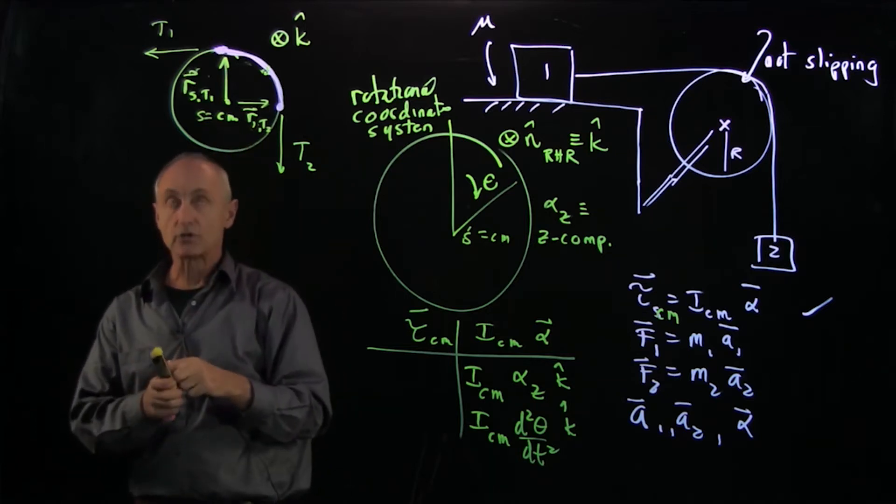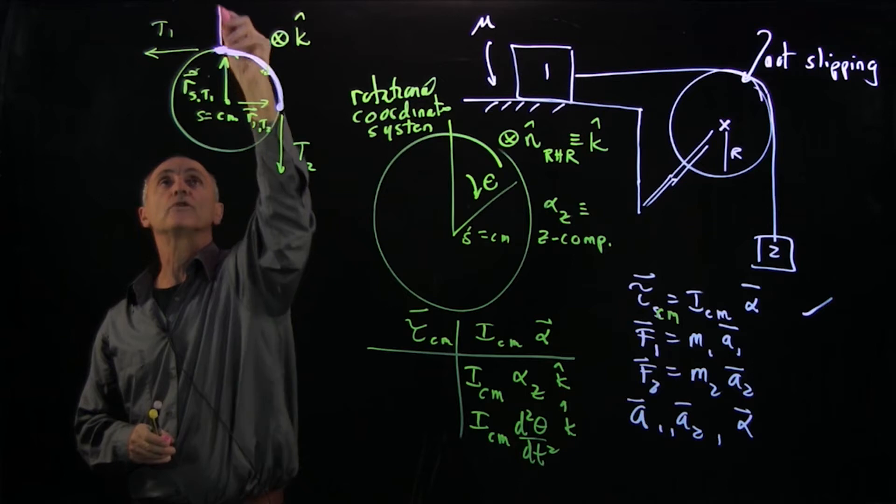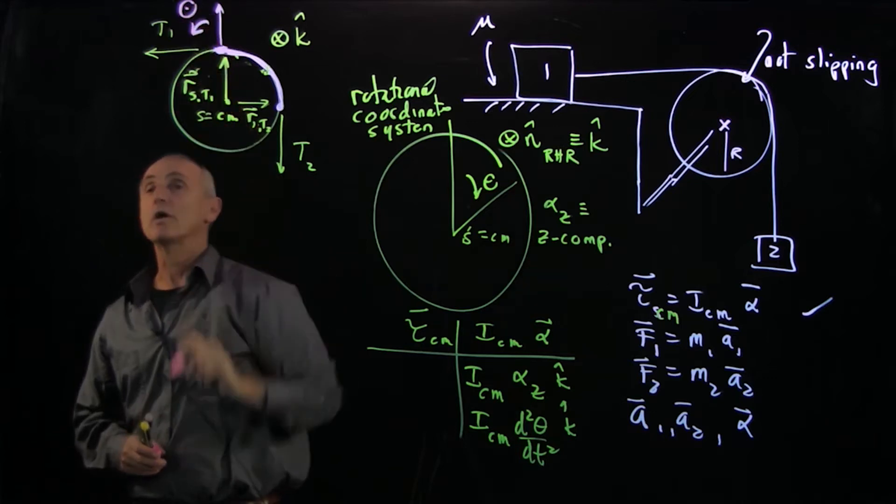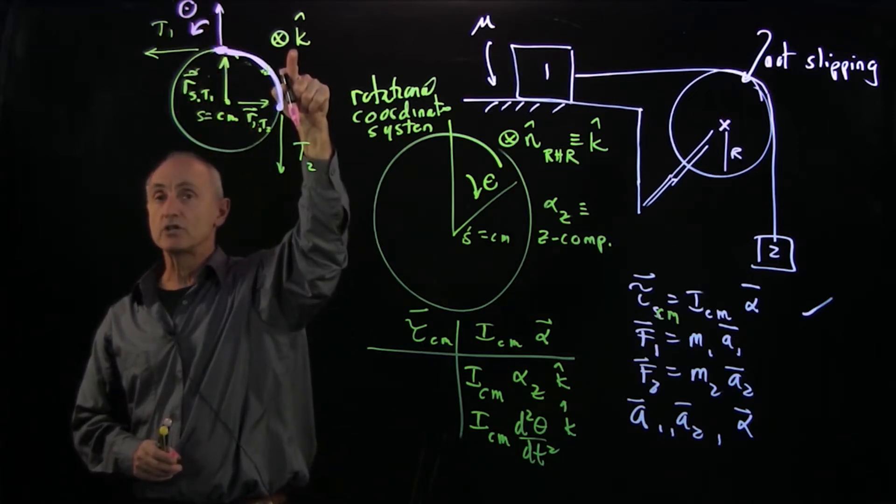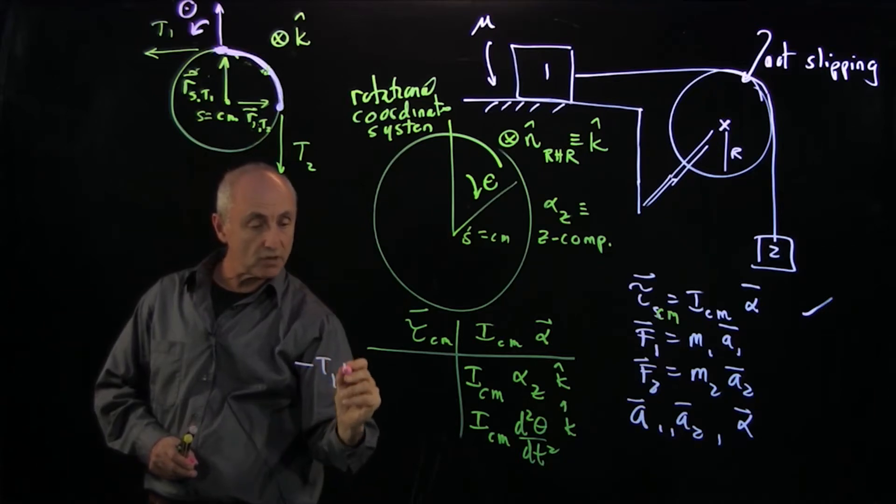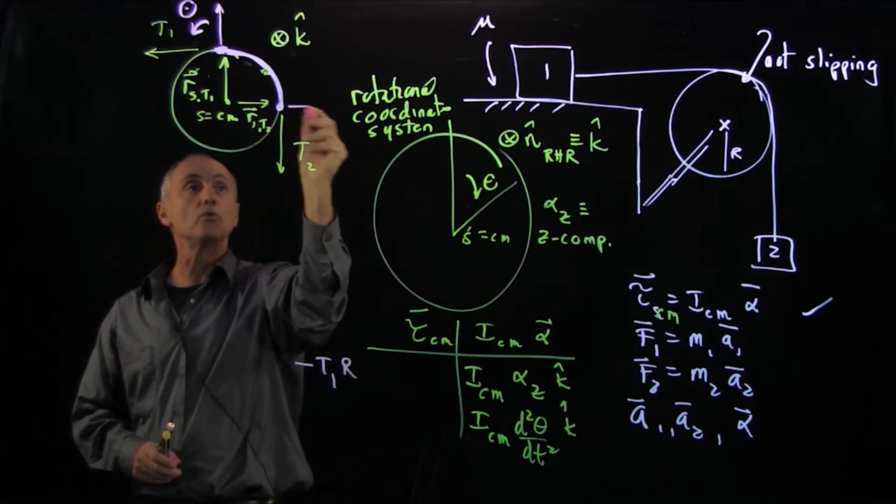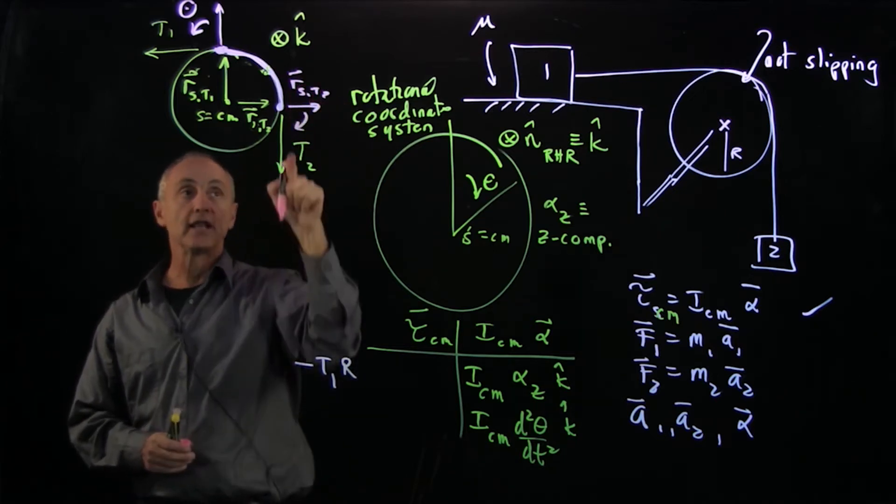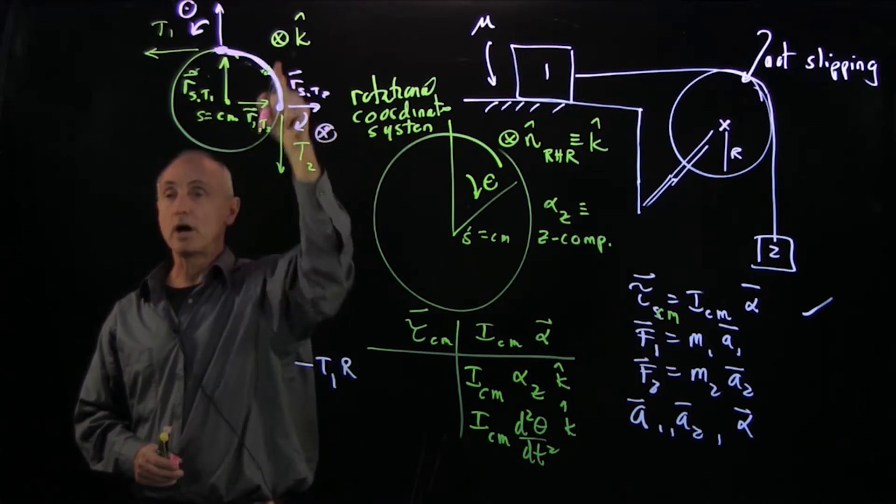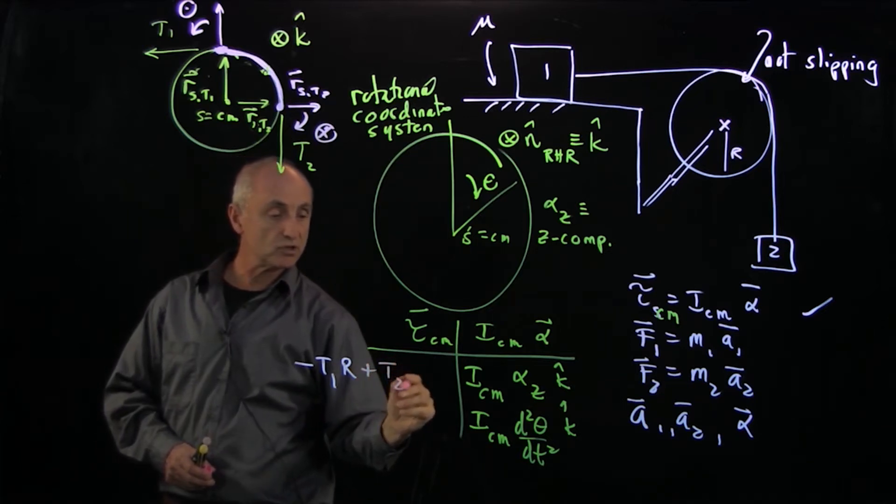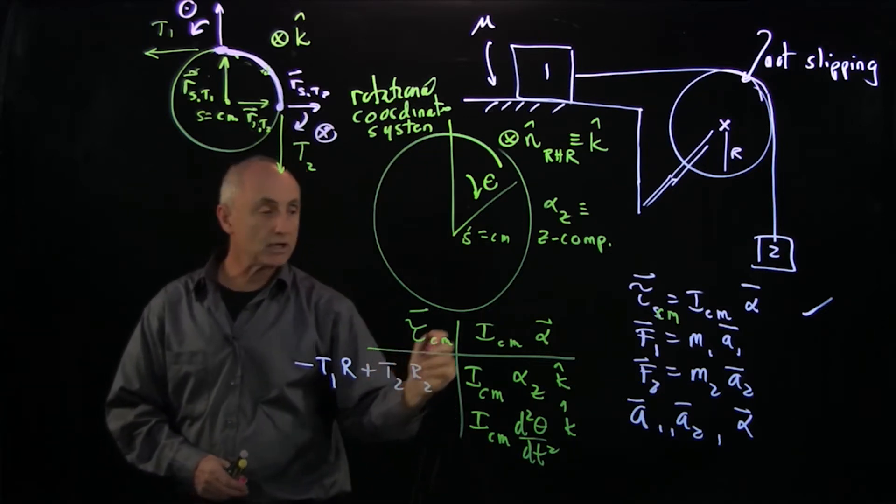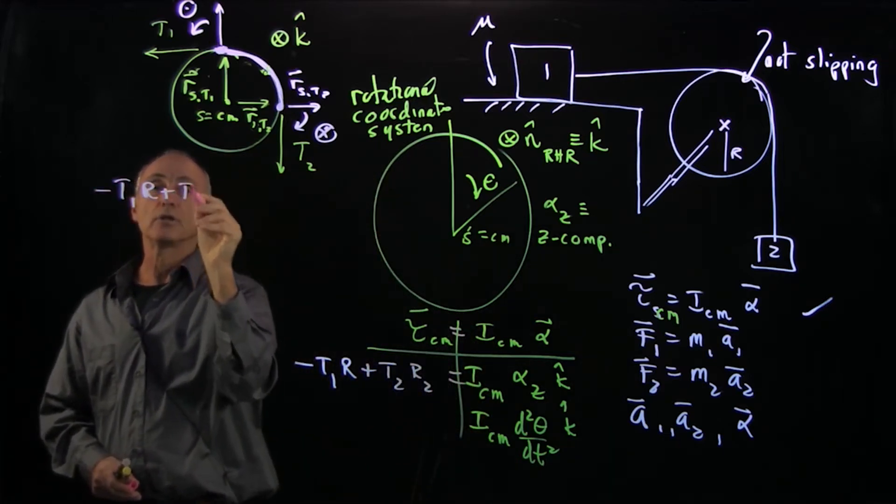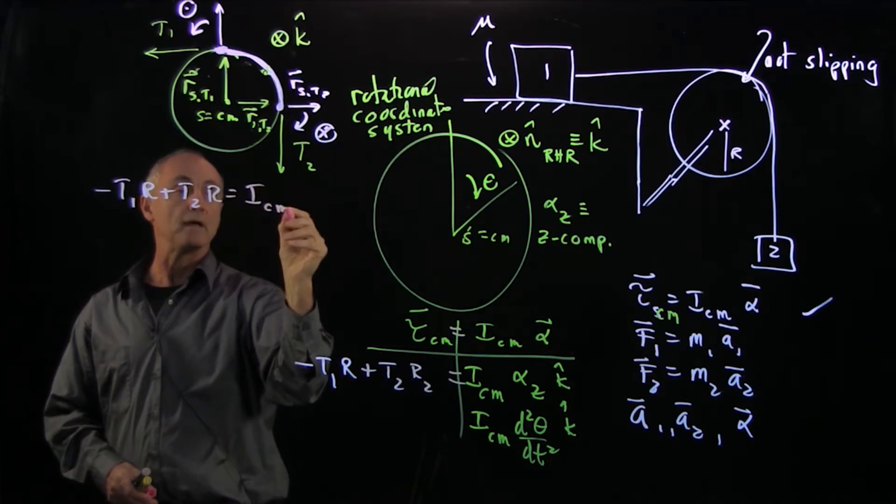When we calculate the cross product of RST2, we put these two vectors tail to tail. Notice that this vector is giving us a torque out of the board. Our positive direction is into the board, so over here we have minus T1R. Whereas T2, when we calculate that torque, that torque is into the board, which is our positive direction, and so that's plus T2R. In our torque principle, we set these two sides equal and we have minus T1R plus T2R equals ICM alpha Z.